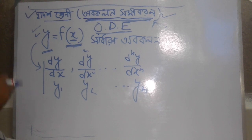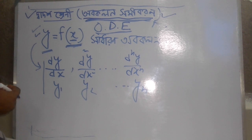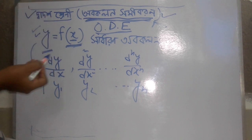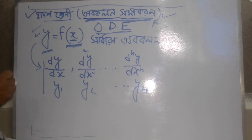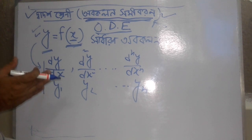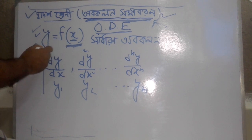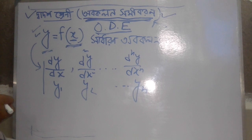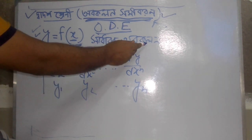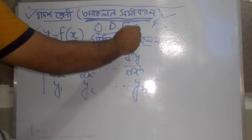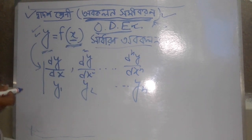Then you will start to learn how to learn from the next step. This is an Avokal-Somikoron. Now, if we have a certain number of different types, we can call this type of ODE.